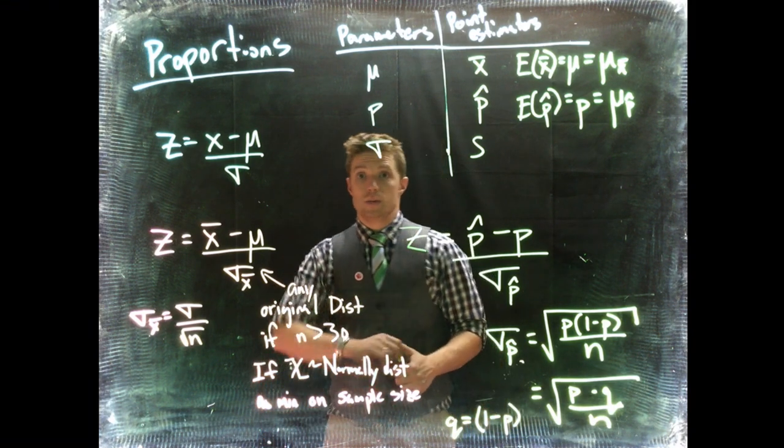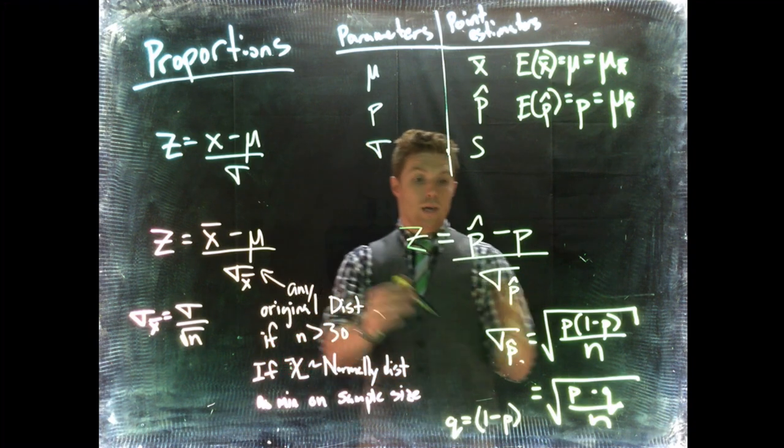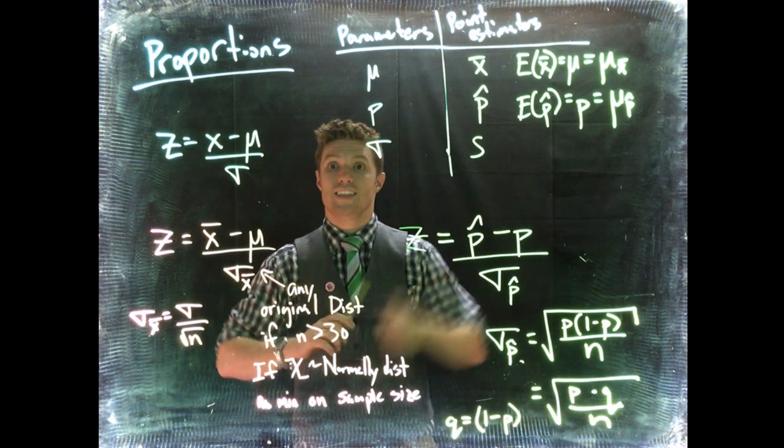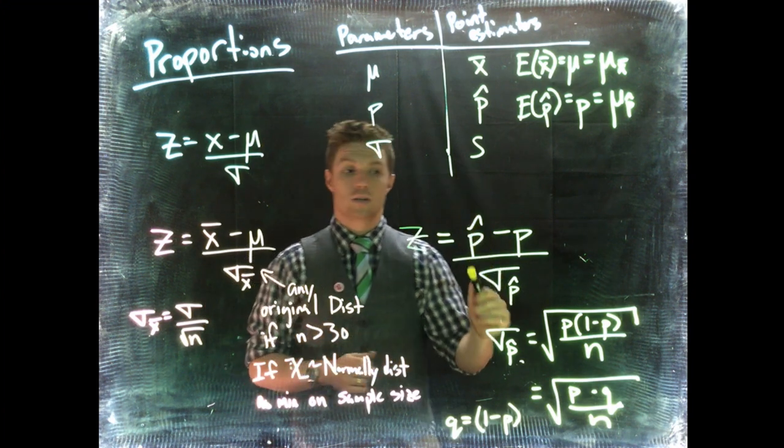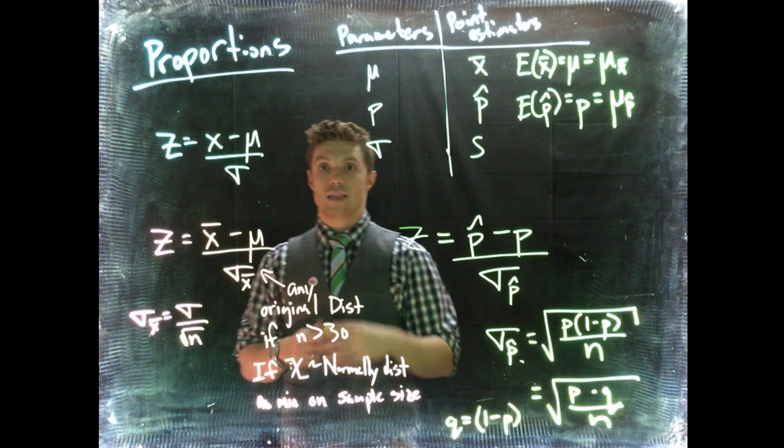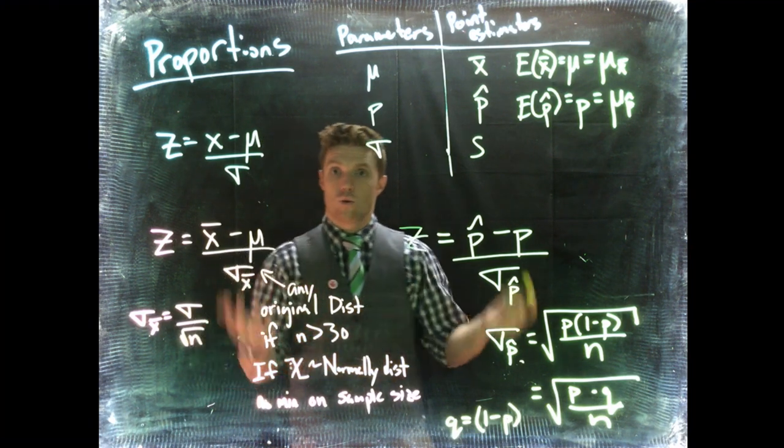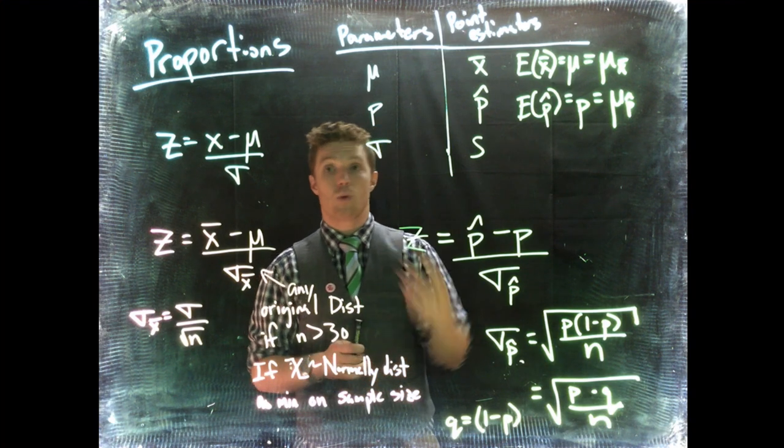This means from our Central Limit Theorem that we can use the normal distribution to talk about the distribution of sample proportions. This allows us to expand the idea of normal distribution with respect to categorical variables or proportions.